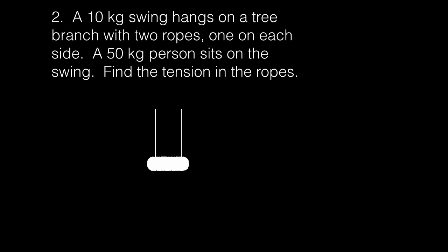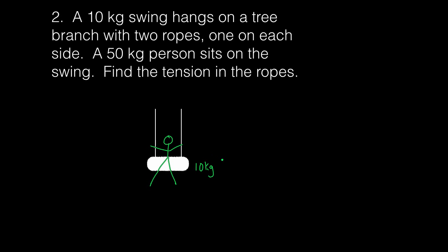Number two says a 10-kilogram swing hangs on a tree branch with two ropes, one on each side. A 50-kilogram person sits on the swing — find the tension in the ropes. The swing weighs 10 kg, but it also has a person of 50 kg on it. So the total mass that the ropes are feeling is 10 plus 50, a total of 60 kg.